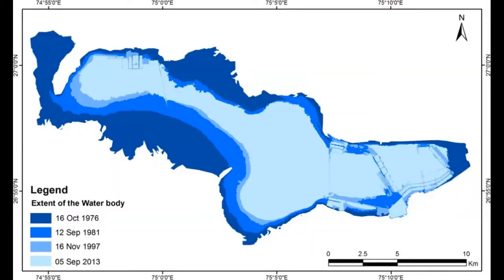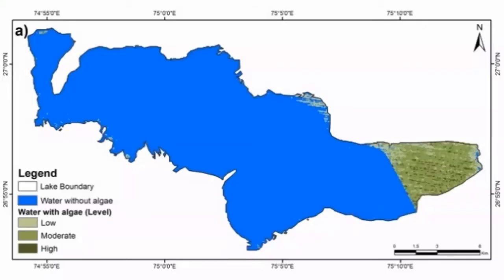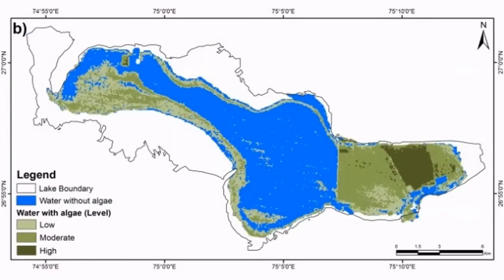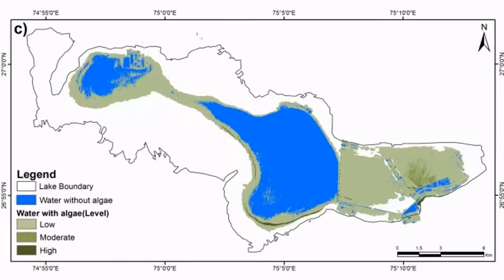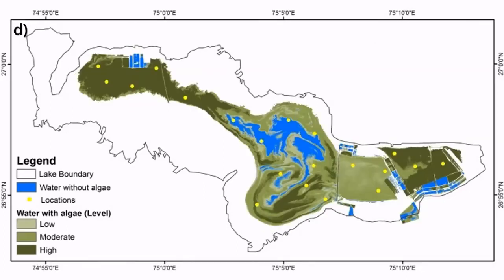There is a drastic change in the water body in Sambur Lake over the period of years, and significant increase in algal bloom are serious concerns for the lake's existence. The screen shows the distribution of algal bloom in October 1976, September 1981, November 1997, and September 2013.